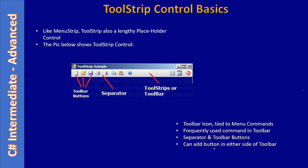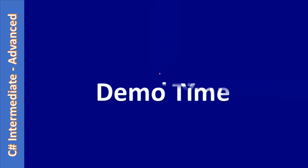One can add toolbar buttons on either side of the toolbar — some buttons on the left side and some on the right side. The toolbar can also be docked on any edge of the form using the quick access menu. At present you can see the ToolStrip is docked towards the top, but you can dock it towards the left, right, or bottom. However, docking at the top is the most frequently used position. There is no demo in this video — thank you for watching.